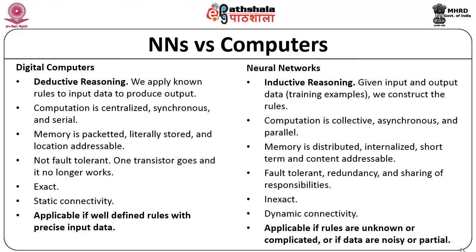Let us understand the difference between neural networks and general computers. In digital computers, reasoning is deductive — there are rules with a left-hand side and right-hand side; any rule whose LHS is satisfied is triggered and produces an output. But in neural network-based learning, it is inductive reasoning: given input and output data as training examples, we construct the rules. So in a general digital computer, rules already exist; in a neural network-based environment, rules are generated.